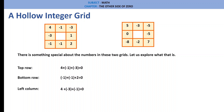Left column: 4, minus 3, minus 1 — sum is 0. Right column: minus 3, plus 1, plus 2 — sum is 0. So whatever we add — top row, bottom row, left column, right column — all add to 0.